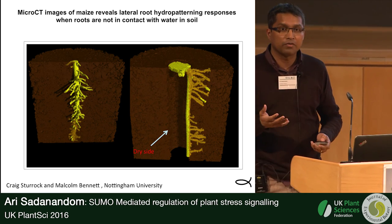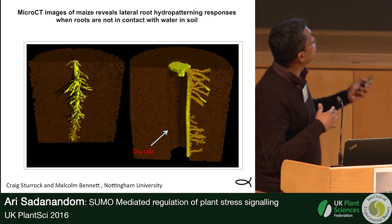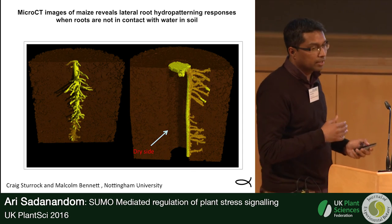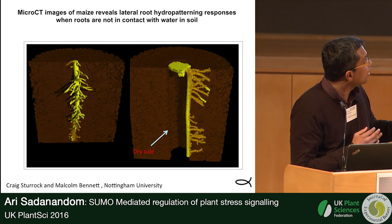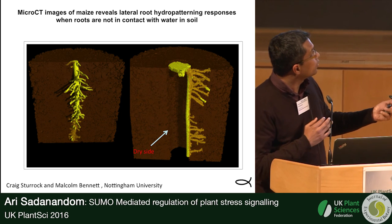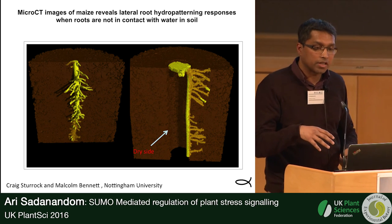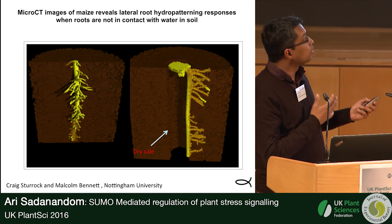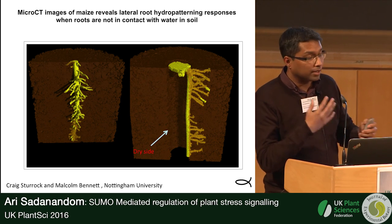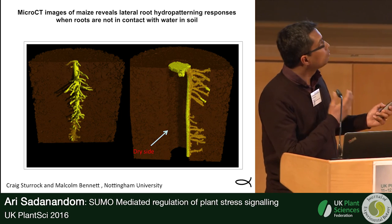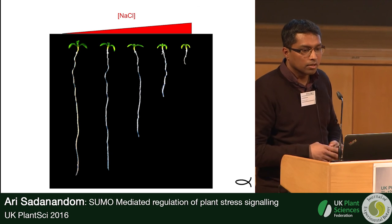This is a computer tomography picture of a maize root going through the soil, done in collaboration with Malcolm Bennett at Nottingham University and Craig Sturrock. You can see that when you make one side of the soil dry, the lateral roots only grow in one direction — similar to what you see in the tree. The modification I'm going to talk about today plays a quite important role in this process and in auxin signaling in this pathway.